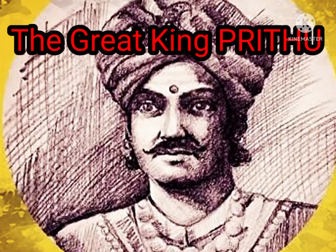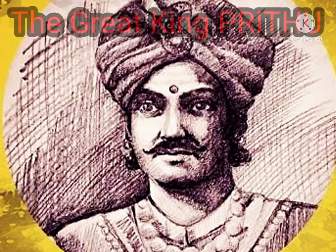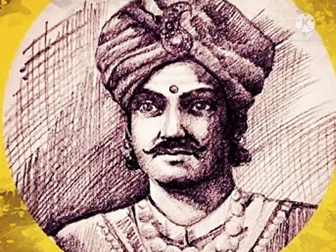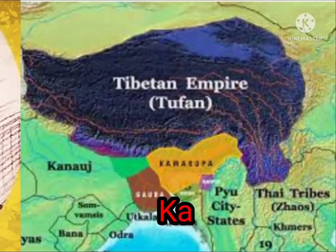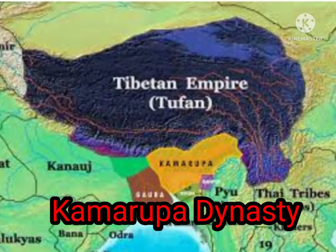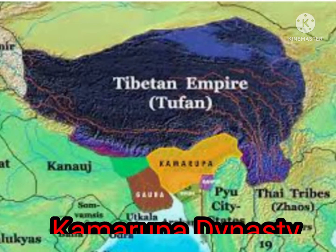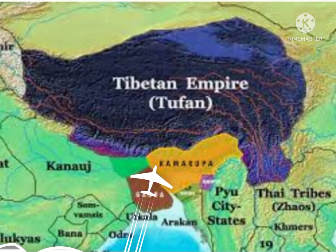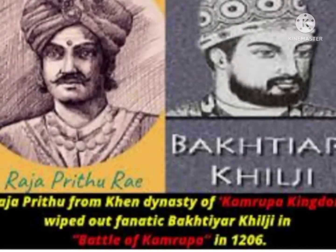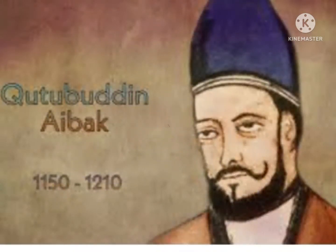He belonged to the Kamrup dynasty. The Kamrup dynasty was established during the 4th century CE in the eastern part of Bharat. Raja Prithu was the notable ruler of this dynasty. He played a very important role in defending the nation under the attack of Bhaktiyar Khilji.